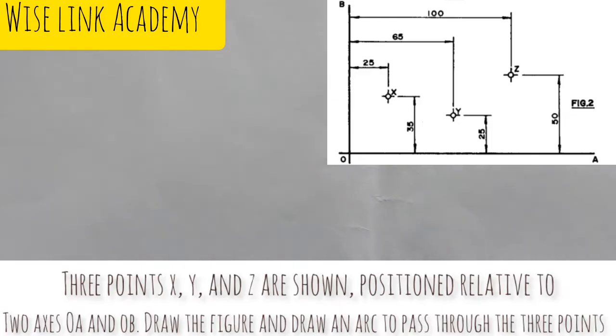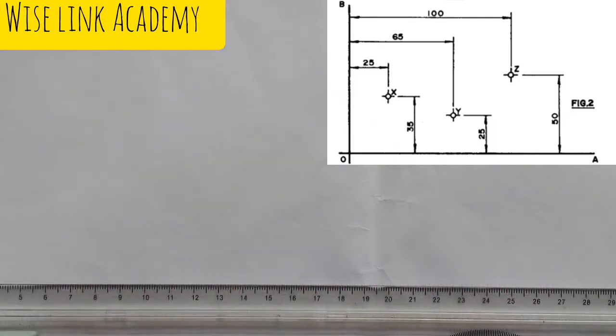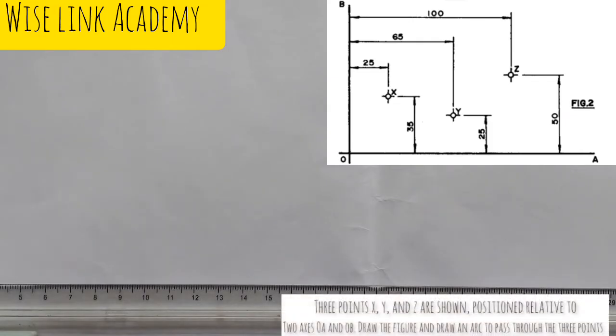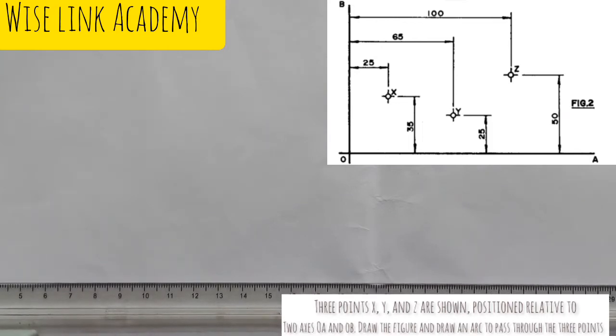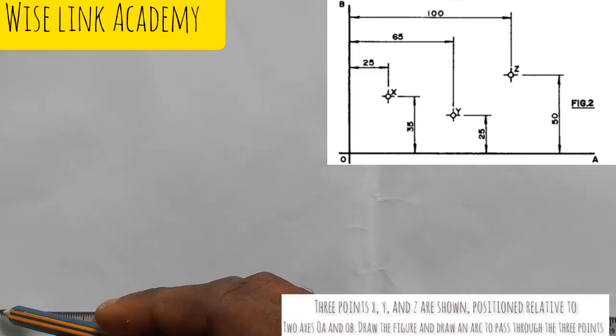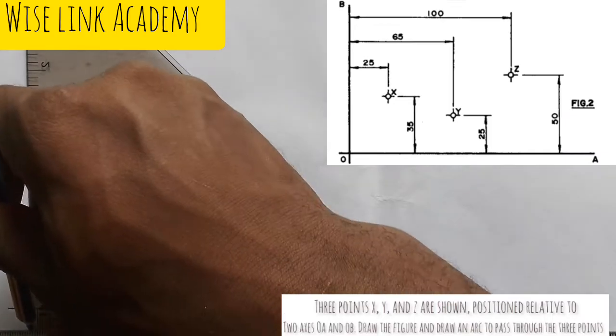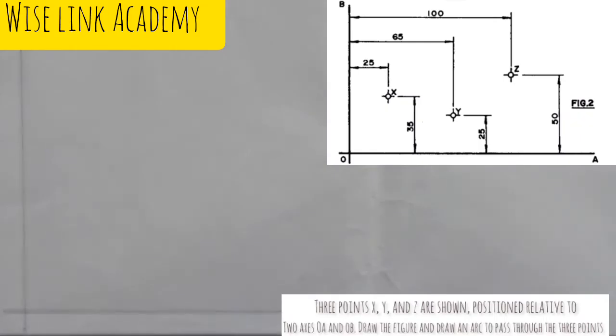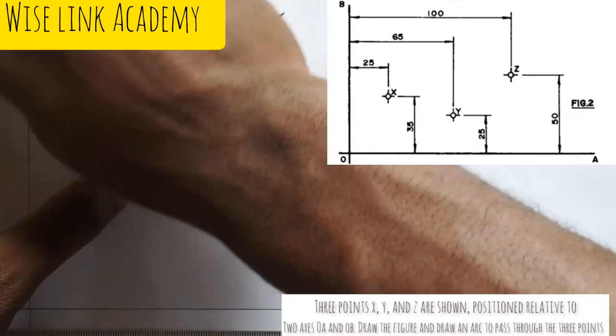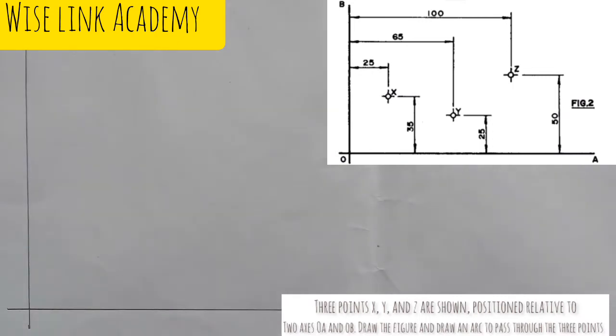As you can see that figure at the right corner of the screen, my first task here is to draw my X axis and Y axis, which simply means the horizontal line and the vertical line. I have this, drawing my horizontal line with my T square. I have the horizontal line. And draw a vertical line upward. So I draw a vertical line upward. I call this point here my point O, my point O.